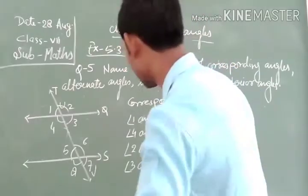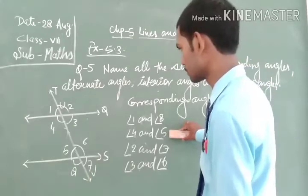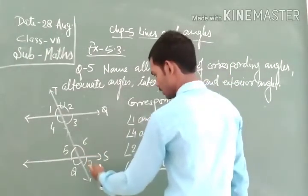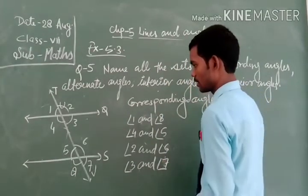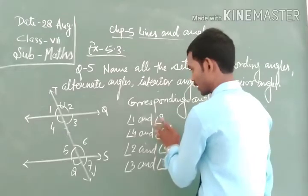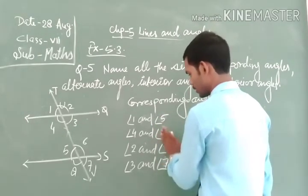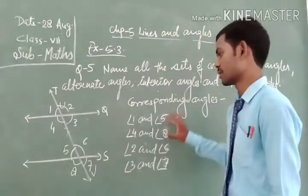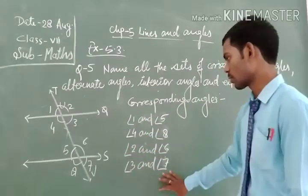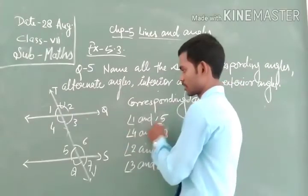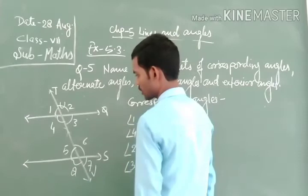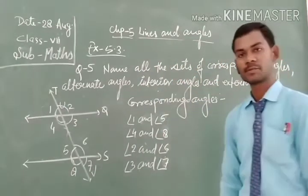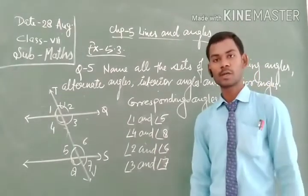Correction: angle 2 and angle 6 are corresponding angles, and angle 3 and angle 7 are corresponding angles. We can also see that angle 1 and angle 5 are corresponding angles, and angle 4 and angle 8 are corresponding angles, because their measures should also be equal. The measure of angle 1 and the measure of angle 5 are equal, confirming they are corresponding angles. So we get the following pairs of corresponding angles.